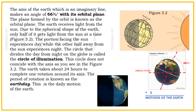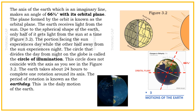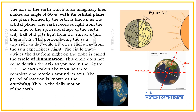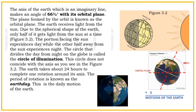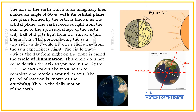The Earth takes about 24 hours to complete one rotation around its axis. The period of rotation is known as the Earth day. This is the daily motion of the Earth.